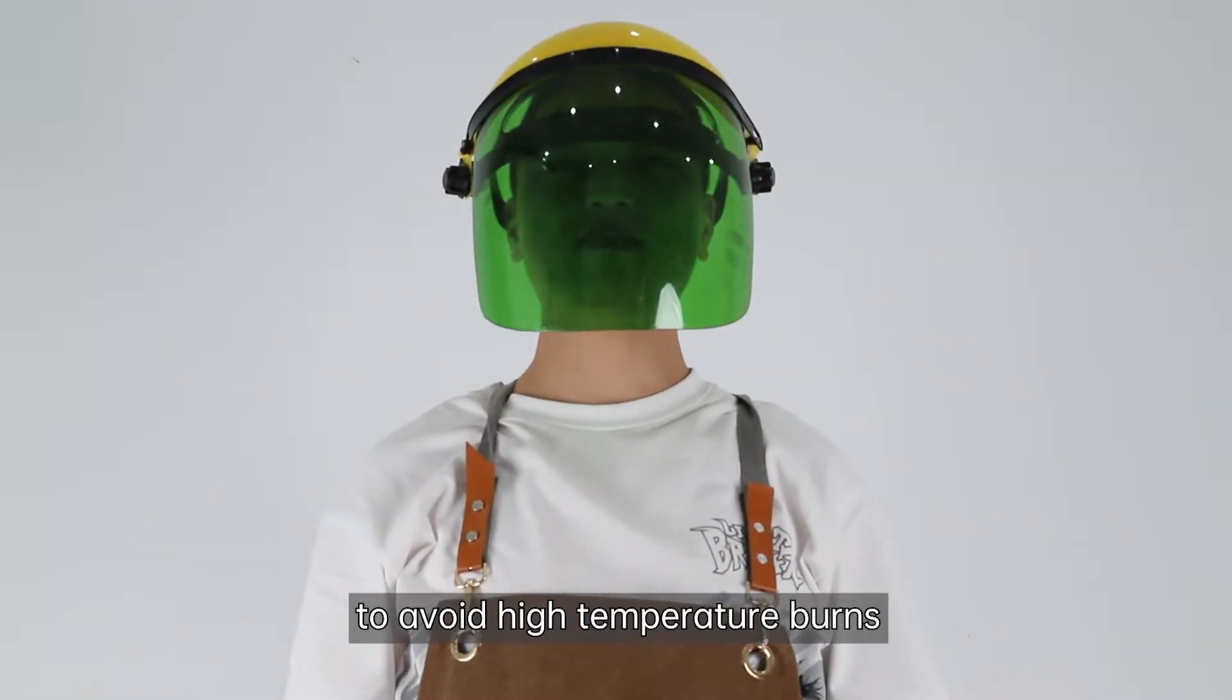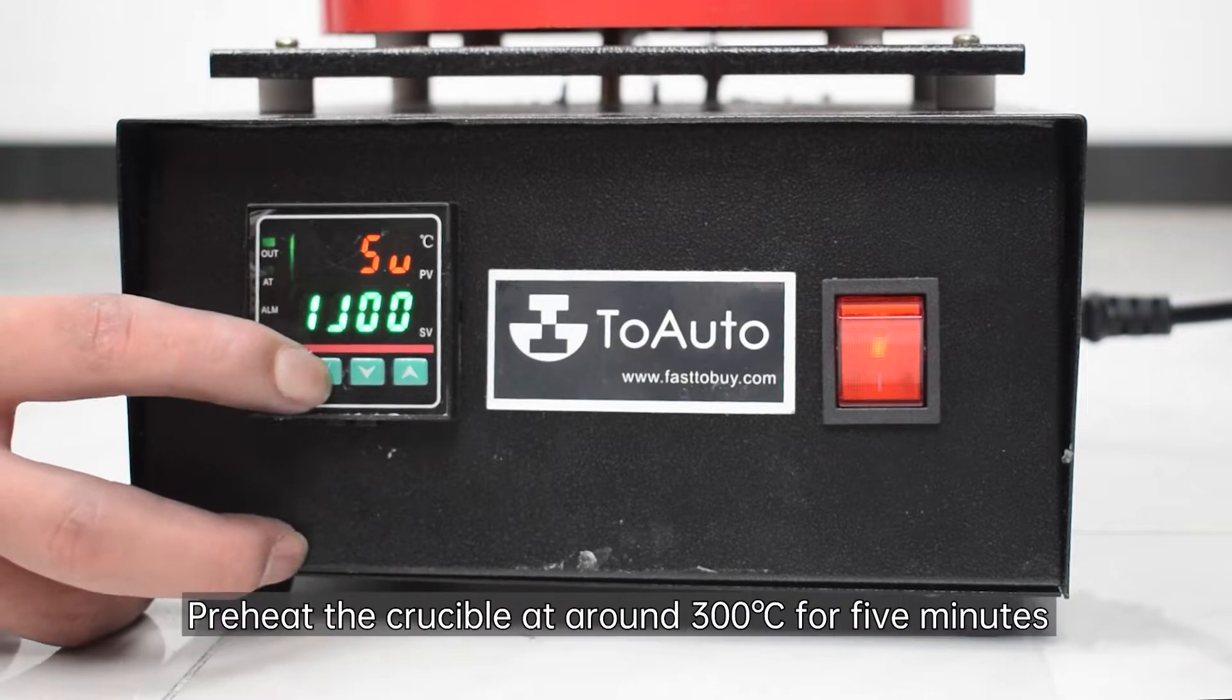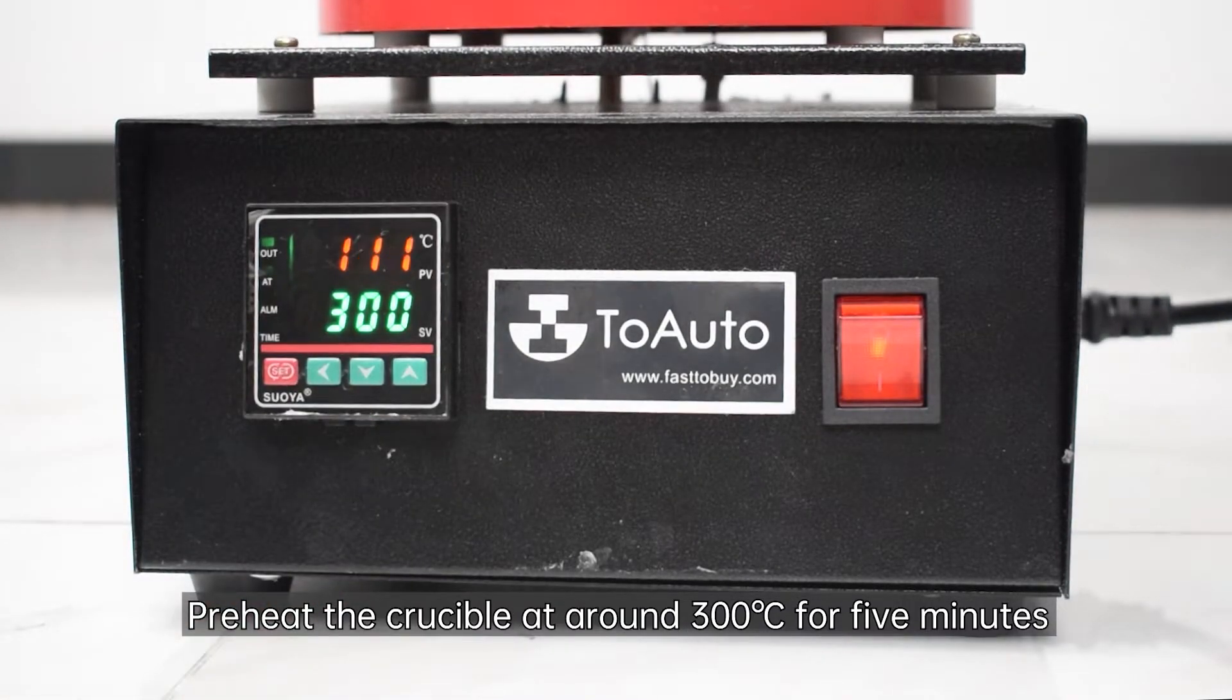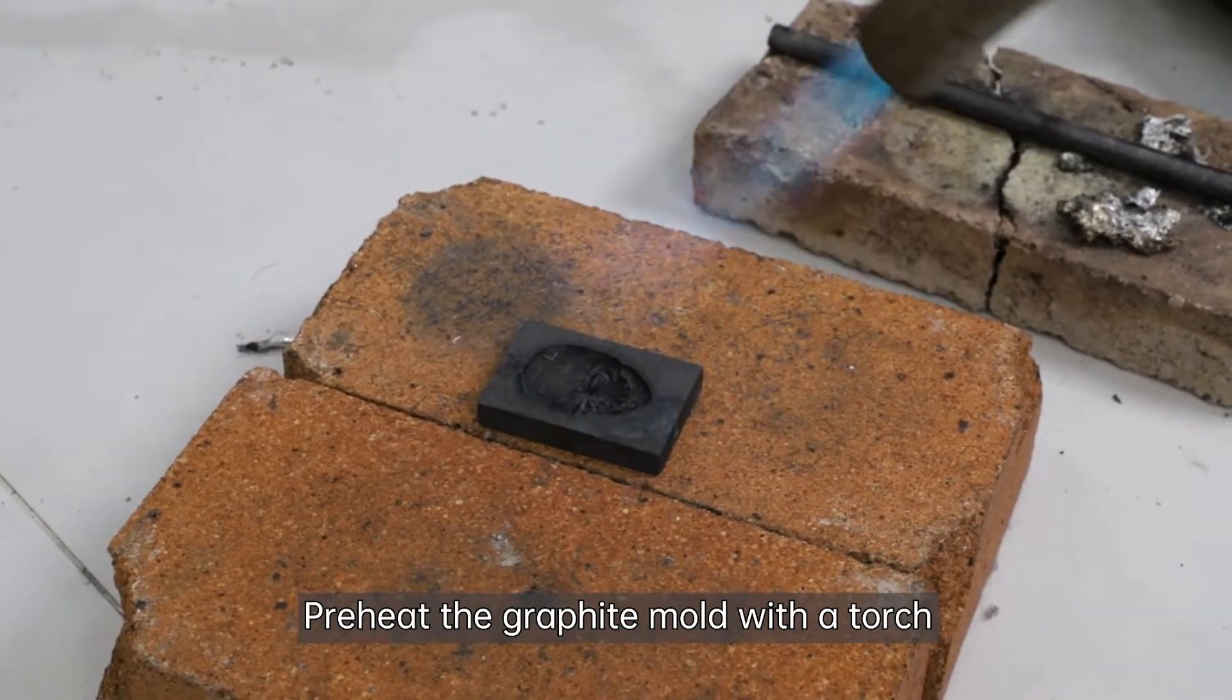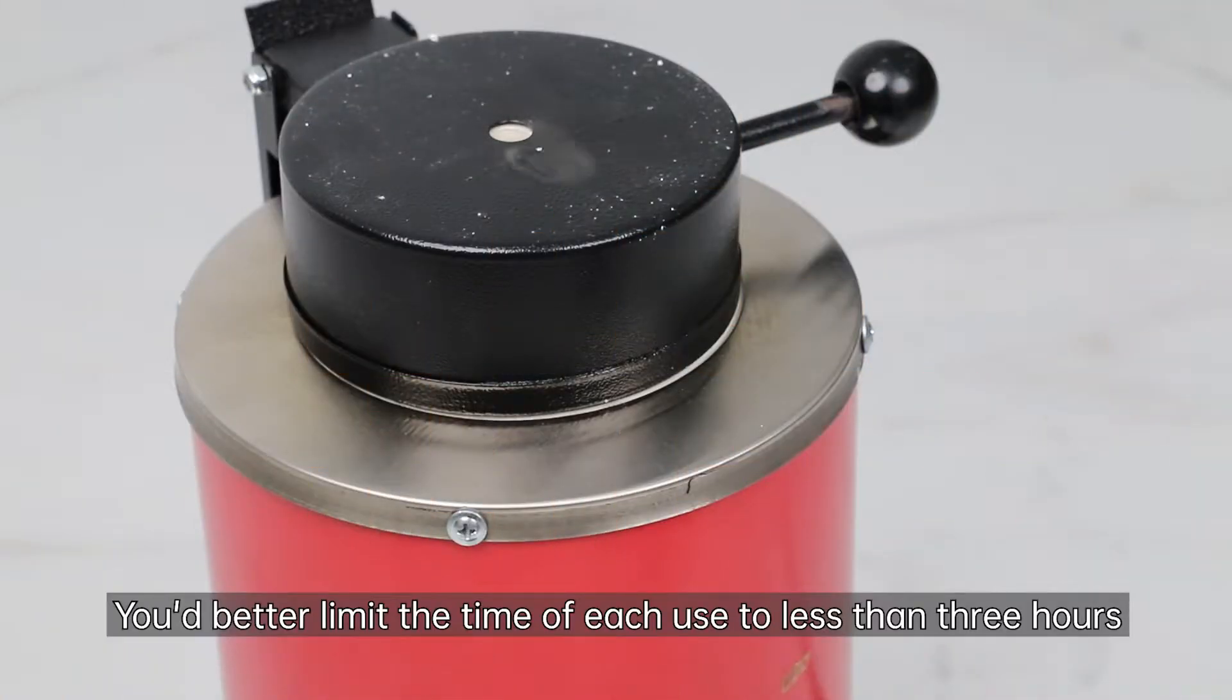To avoid high temperature burns, before melting preheat the crucible at around 300 degrees centigrade for five minutes and preheat the graphite mold with a torch. You'd better limit the time of each use to less than three hours.